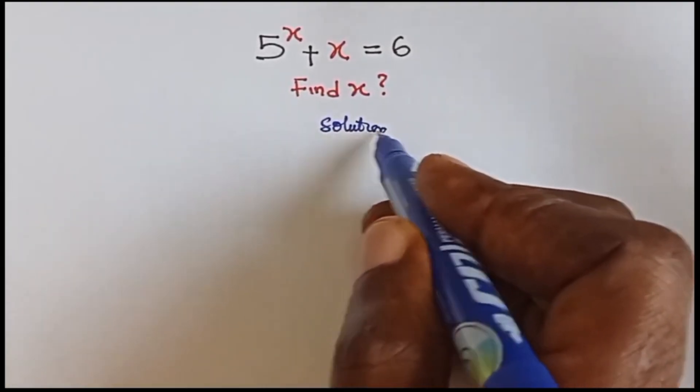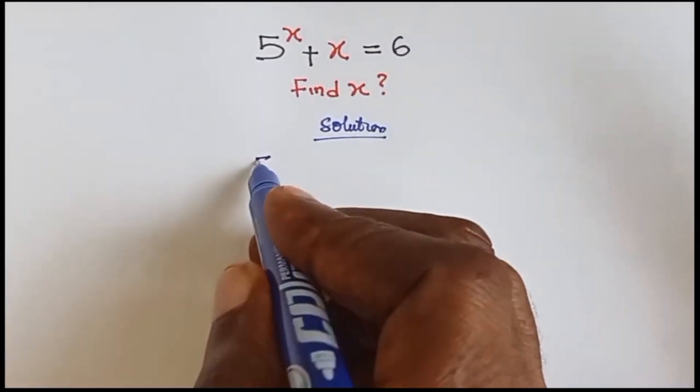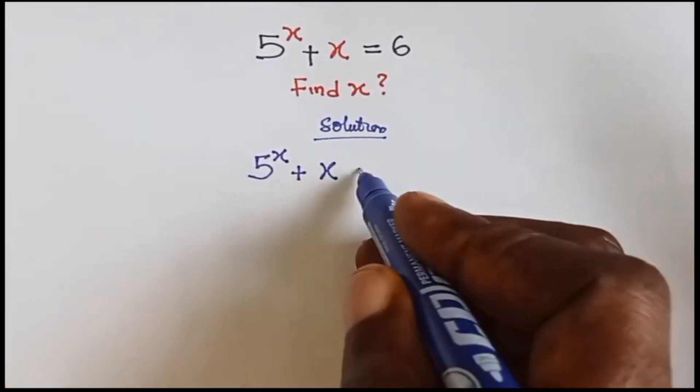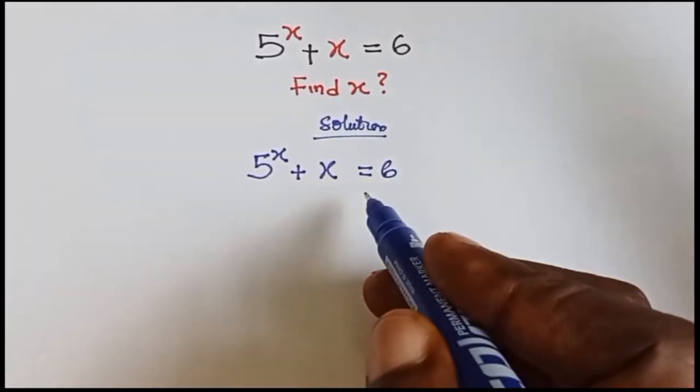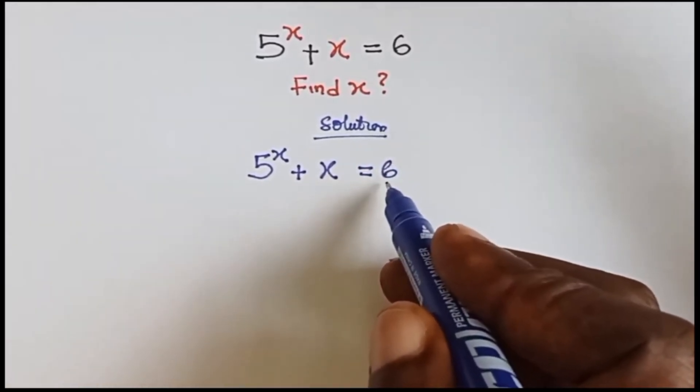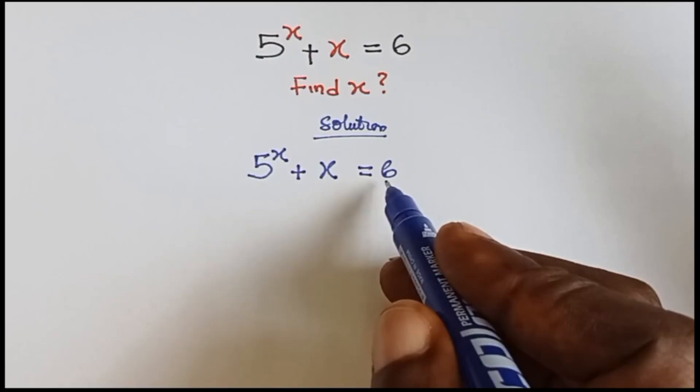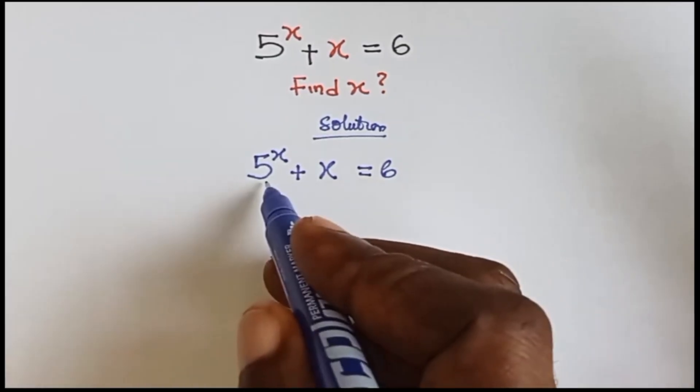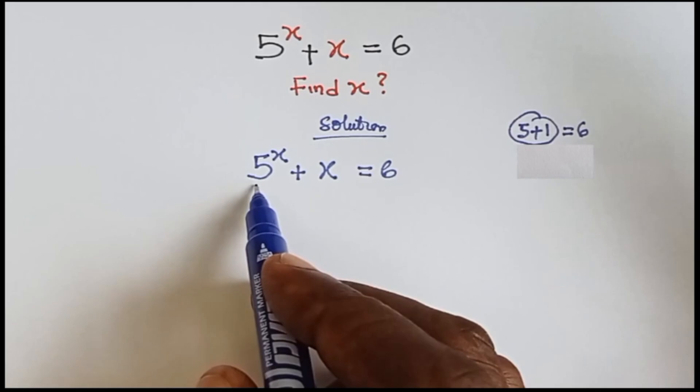Solution. We have 5 raised to the power x plus x equals 6. What we do is split this 6 into two numbers, and one of the numbers must be a multiple of 5 because we have 5 as the base here.